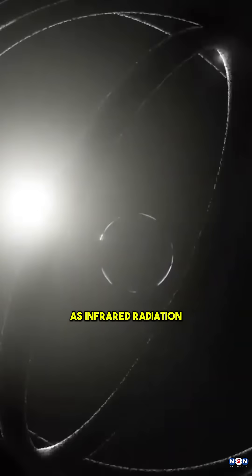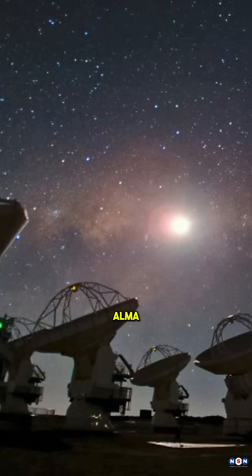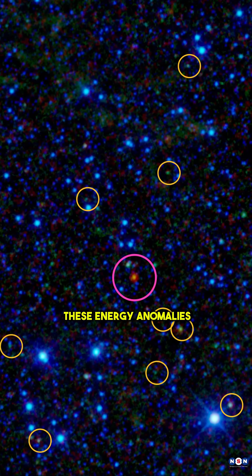These structures would emit waste heat as infrared radiation, signals we could detect. Using tools like WISE and ALMA, astronomers are scanning the skies for these energy anomalies.